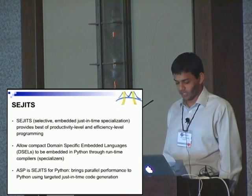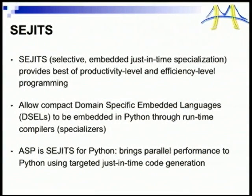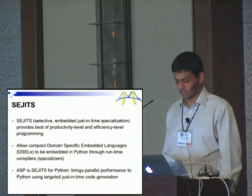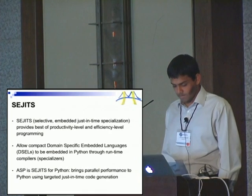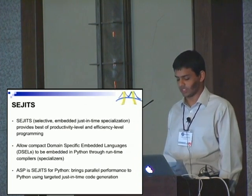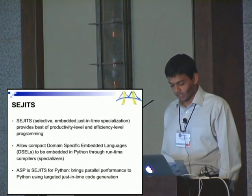One way to bridge this disparity is through a combination of code generation, code lowering, and just-in-time compilation techniques called SEJITS, which stands for Selective Embedded Just-In-Time Specialization. SEJITS provides the best of both productivity programming and efficiency programming by allowing a compact, domain-specific embedded language, or DSEL, to be embedded in Python. It allows us to create a mini-runtime compiler for a particular DSEL, which itself is implemented in Python. This mini-compiler, called a specializer, performs code generation at runtime, allowing productivity programmers to express their problem in the appropriate DSEL and harness the performance and parallelism benefits of lower-level languages.